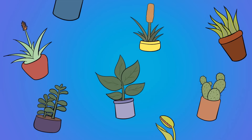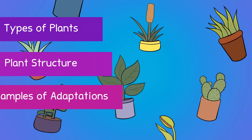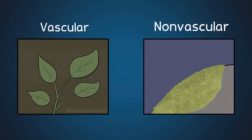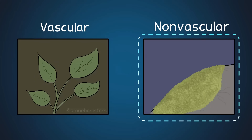This video is going to briefly touch on types of plants, their structure, and some fascinating adaptations. First, we need to outline two general plant categories: vascular and non-vascular.